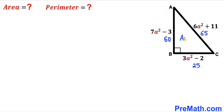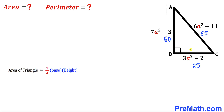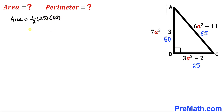Now we calculate the area of the right triangle. Recall: Area = ½ × base × height. The base of this triangle is 25 and the height is 60. So the area of triangle ABC = ½ × 25 × 60 = 750 square units.